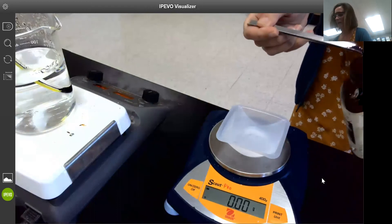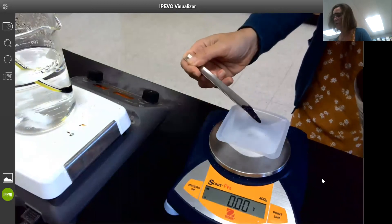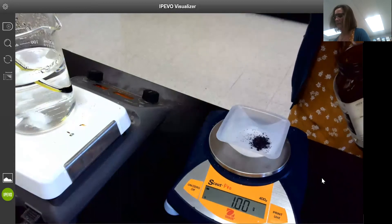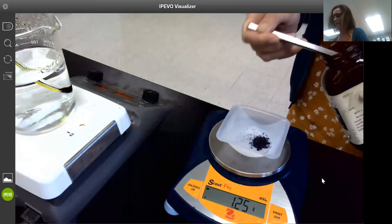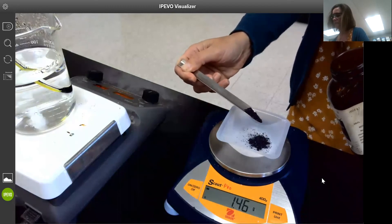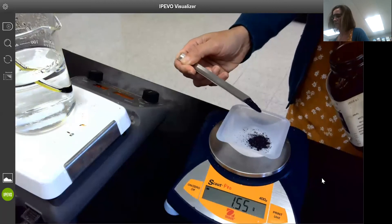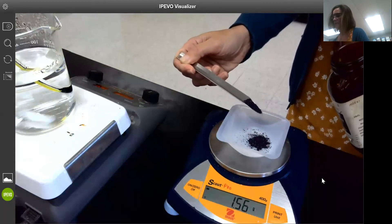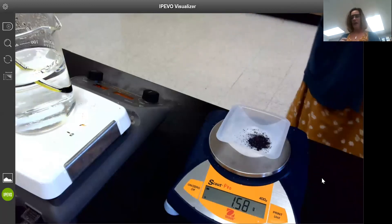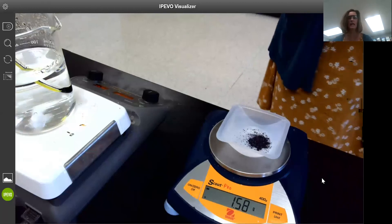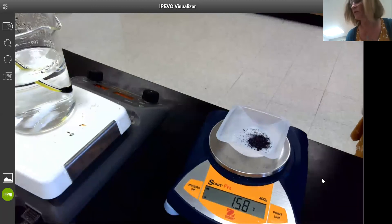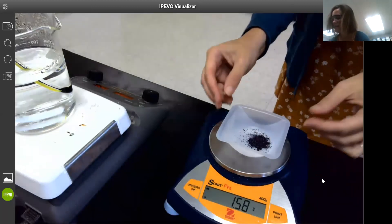Almost there. Go ahead and record that value: 1.58 grams of potassium permanganate plus or minus 0.01. Just as a description, it is a little bit hard to see in here, but it is a crystalline solid, it's purple in color and it's a little bit shiny.